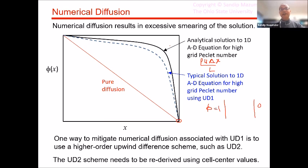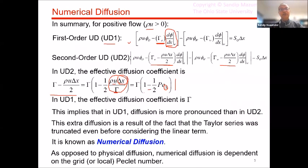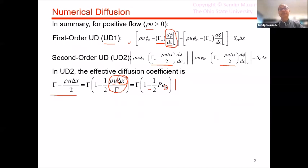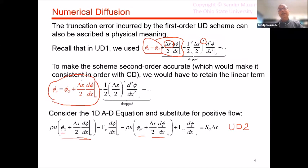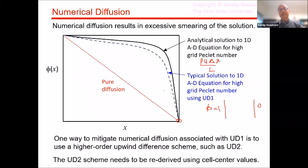That summarizes our discussion of numerical diffusion. A word of caution: the UD2 scheme I concocted here is not the way you would really use it in practice, because it still uses gradients rather than expressing everything in terms of cell center values. Don't try to use that as the actual second-order upwind differencing scheme. Hopefully this explains what numerical diffusion is — thank you.